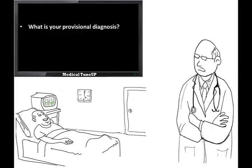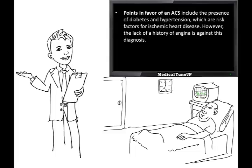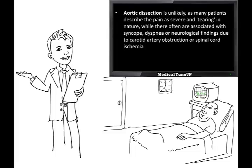So what's your provisional diagnosis? Points in favour of acute coronary syndrome include the presence of diabetes and hypertension, which are risk factors for ischemic heart disease. However, the lack of history of angina is against this diagnosis. Aortic dissection is also unlikely — in aortic dissection, patients may describe the pain as severe and tearing in nature, often associated with syncope, dyspnea, or neurological findings due to carotid artery obstruction or spinal cord ischemia.